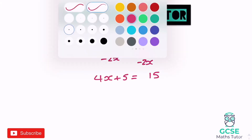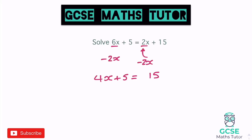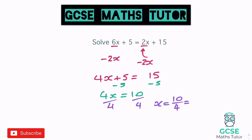Now we've got a quite nice simple equation, we can just follow our normal steps. We can take away the 5, and then we're going to divide by 4. Take away the 5, we get 4x equals 10, and then dividing by 4 — 4 is not going to go into 10 perfectly, so we'll write it as a fraction. Divide by 4 and we get x equals 10 over 4, which we can simplify by dividing top and bottom by 2 to get 5 over 2, which we could also write as 2.5.